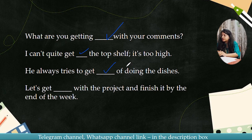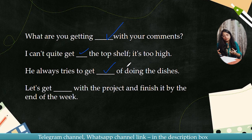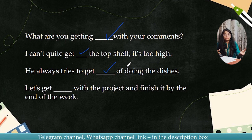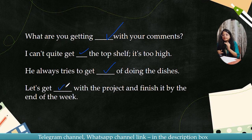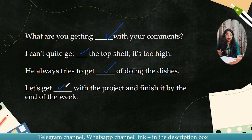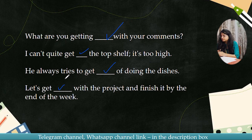He always tries to get [blank] of doing the dishes. The answer is get out — he always tries to get out of doing the dishes. Next: Let's get [blank] with the project and finish it by the end of the week. Let's start it so that we can finish. The answer is get on — let's get on with the project.